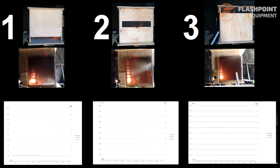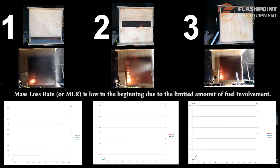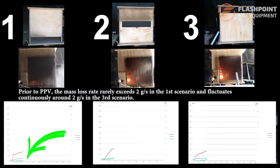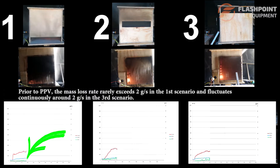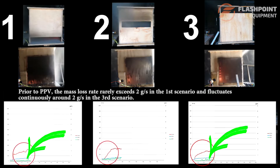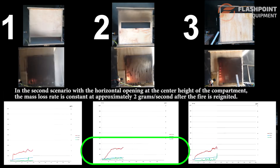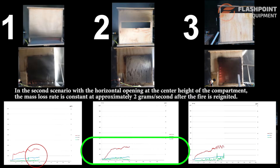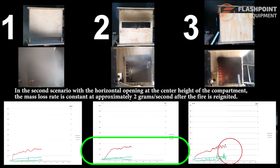As the data indicates, the mass loss rate, or MLR, is low in the beginning due to the limited amount of fuel involvement. Prior to positive pressure ventilation being introduced, the mass loss rate rarely exceeds 2 grams per second in the first scenario and fluctuates continuously around 2 grams per second in the third scenario. In the second scenario, with the horizontal opening at the center height of the compartment, the mass loss rate is constant at approximately 2 grams per second after the fire is reignited.